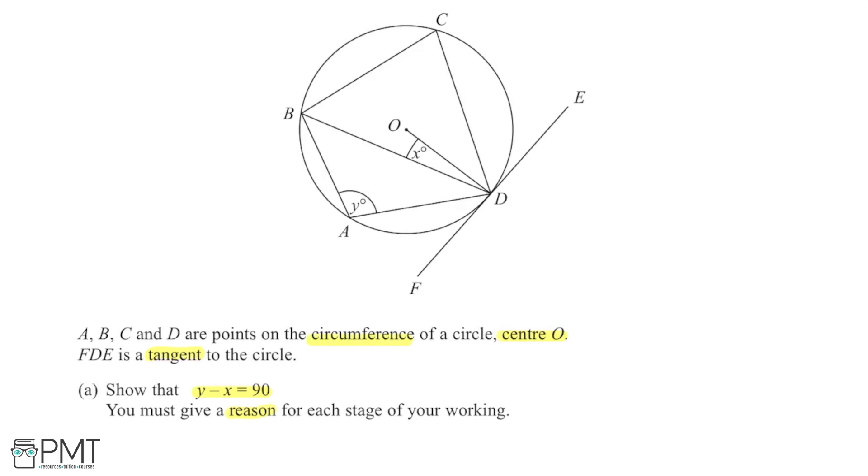So giving a reason for what we're doing in each stage is going to link back to the circle theorems and which circle theorems we've used in this question. If I look at this diagram and what I'm trying to get the answer in the form of, we need y minus x equals 90, so somehow we're going to have to relate y and x to each other. However, I've noticed this value of 90 here, so maybe I should initially start by looking for a 90 degree angle in the diagram.